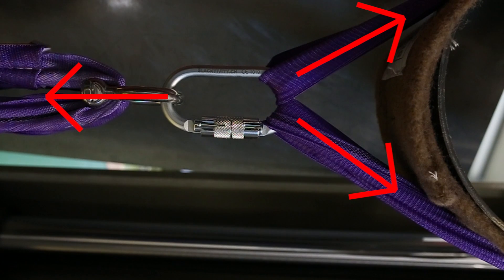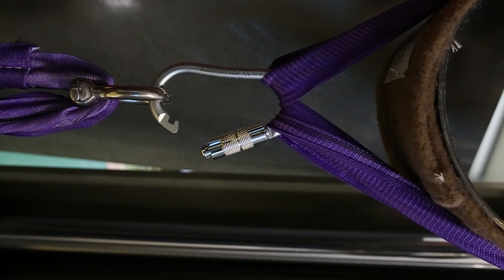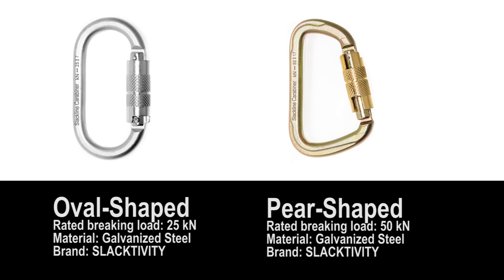This is for example the case when you have a round sling around a tree and connect this one with a slackline. In these tests we compared oval-shaped carabiners with pear-shaped carabiners. The oval-shaped carabiners were rated with 25 kN and the pear-shaped carabiners with 50 kN breaking load. So the pear-shaped carabiner should be about twice as strong as the oval-shaped carabiner.